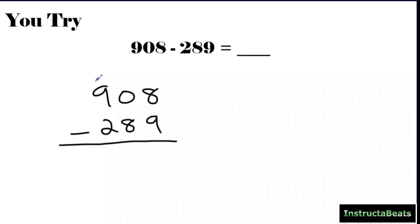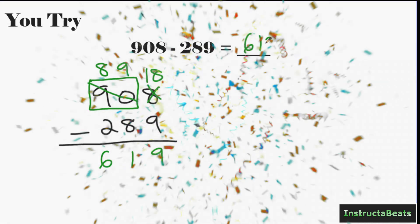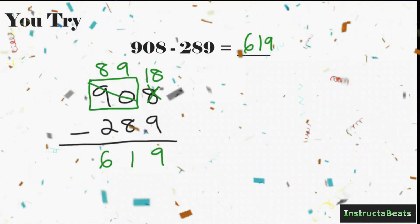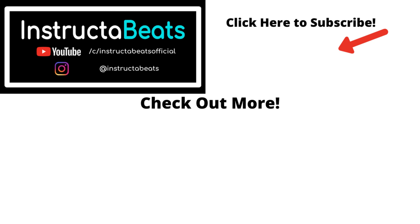I'm going to go to the hundreds place and think about nine hundreds as ninety tens. I'll put a box around it to help visualize. I take away one ten from ninety, leaving eighty-nine tens — that's eight hundreds and nine tens. I had eight ones and got ten more, so now I have eighteen ones. Eighteen minus nine is nine, nine tens minus eight tens is one ten, eight hundreds minus two hundreds is six hundreds. The difference is 619.